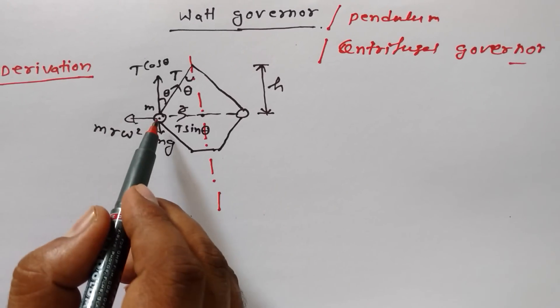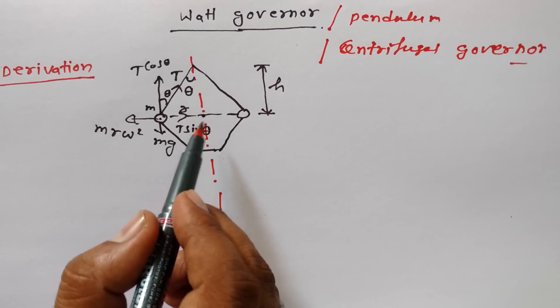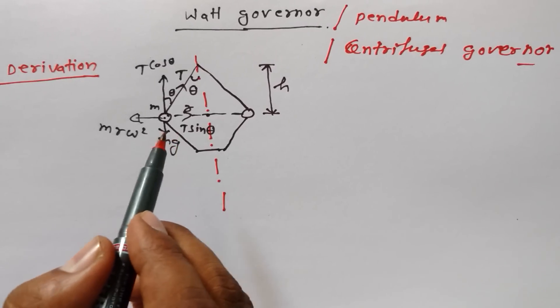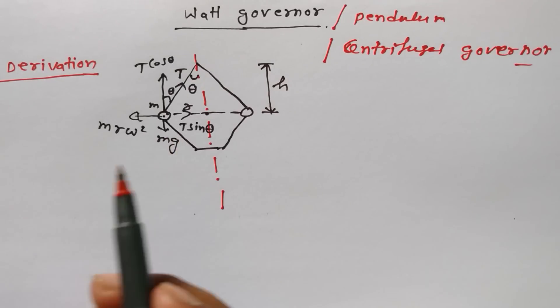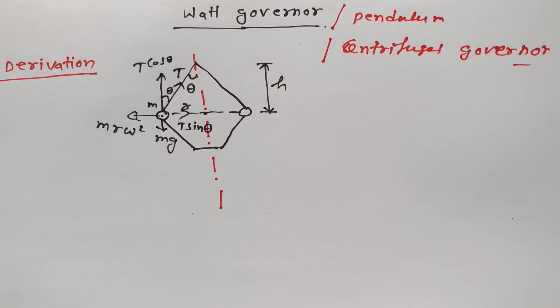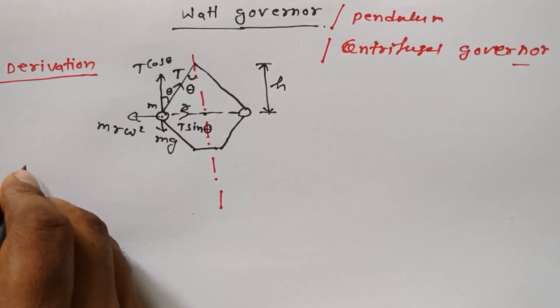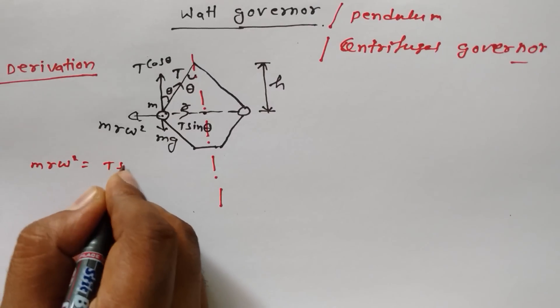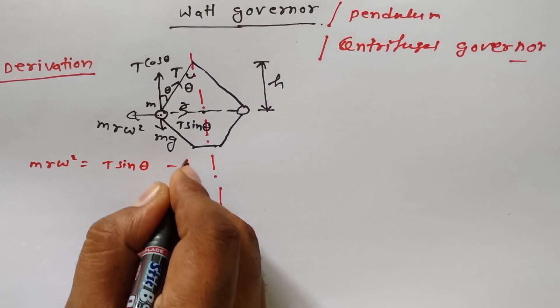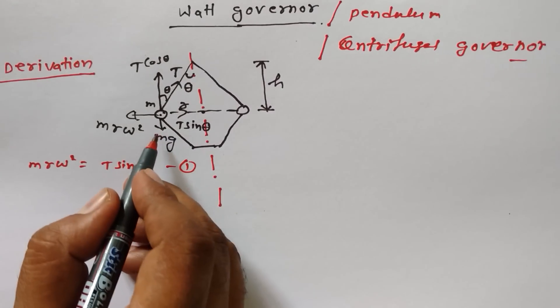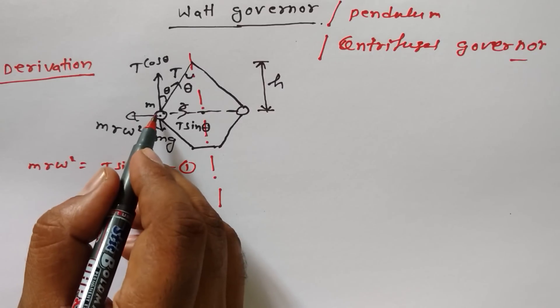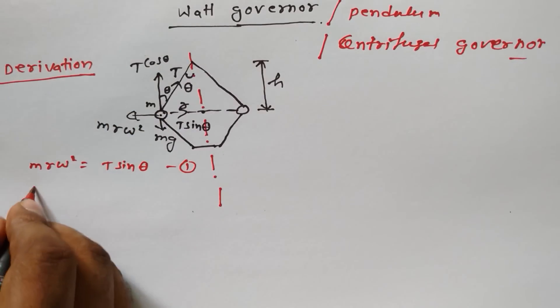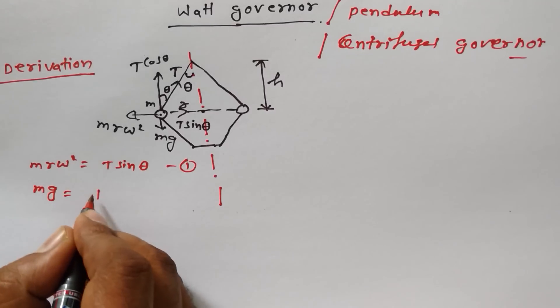Tension on both sides - tension means force, tensile force. Here mr*ω² equals T*sin(θ), equation 1. Another thing: mg is downward and here the same force is acting upward, so mg equals T*cos(θ), equation 2.